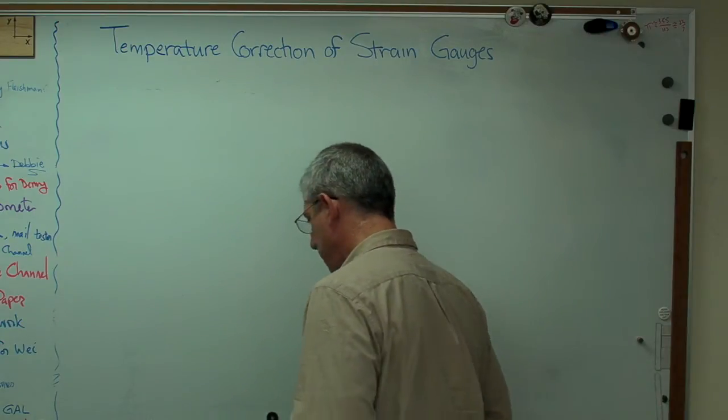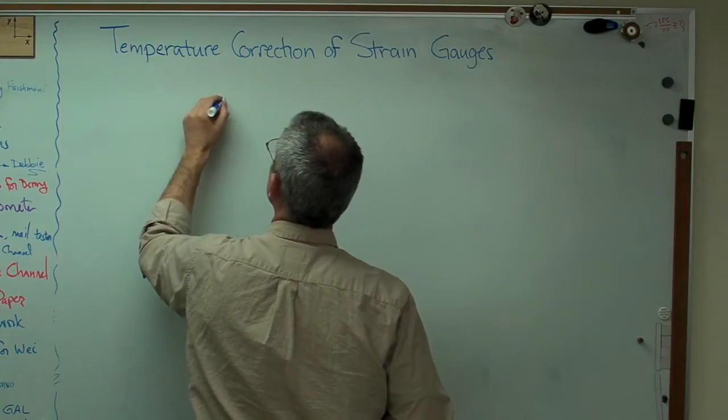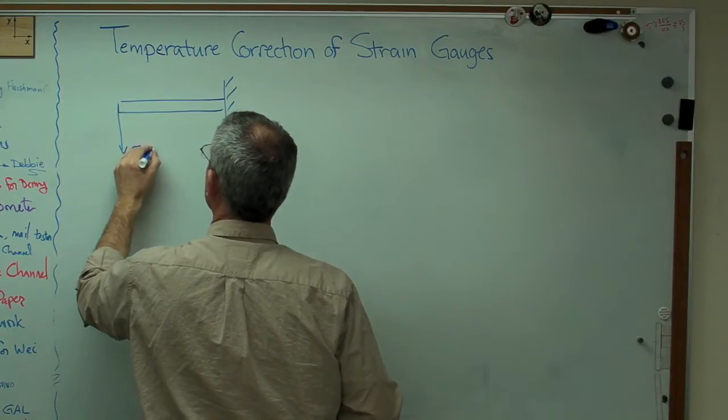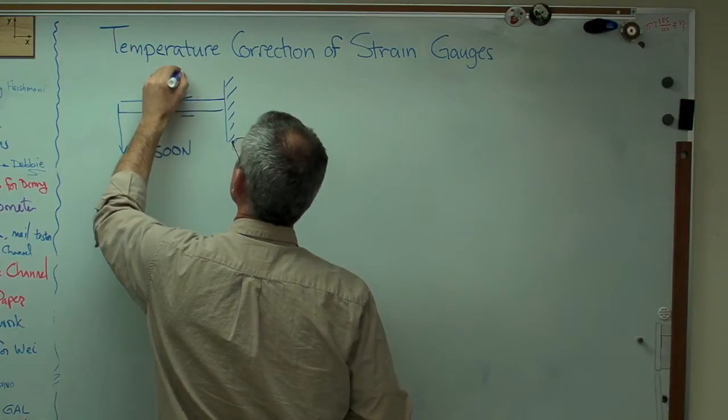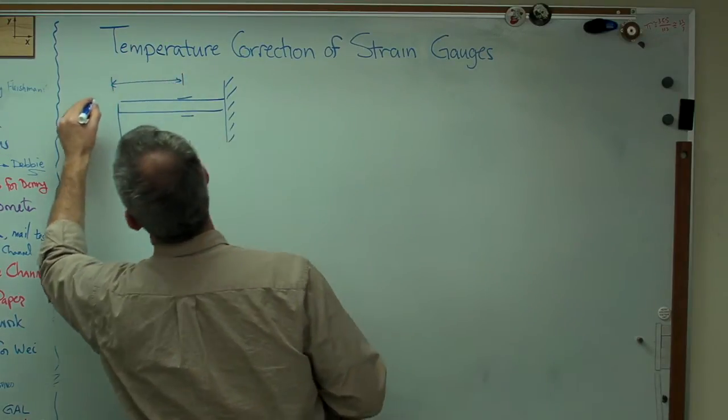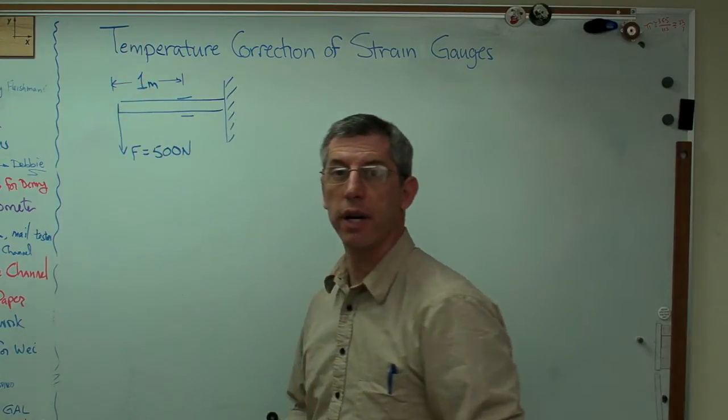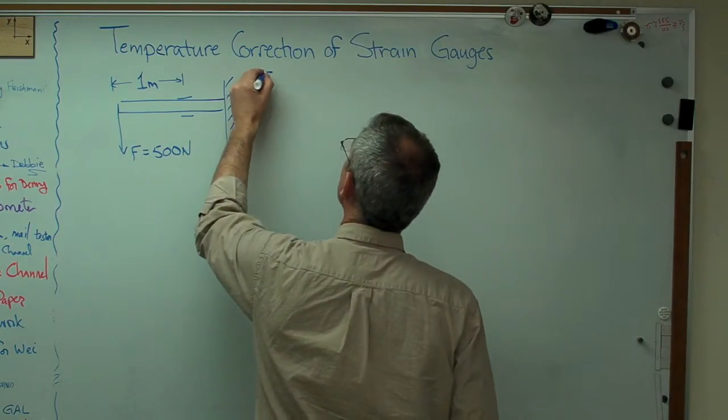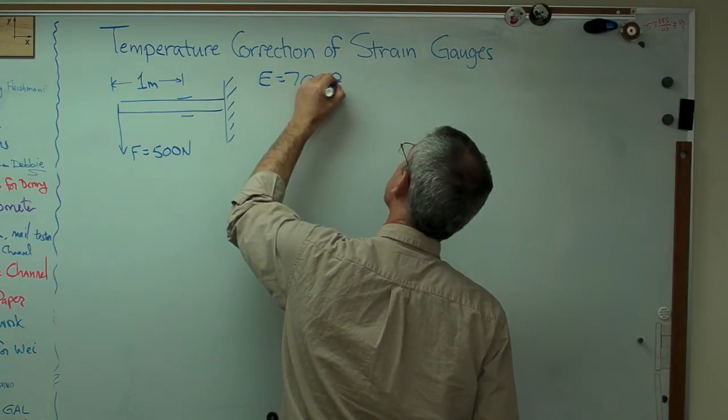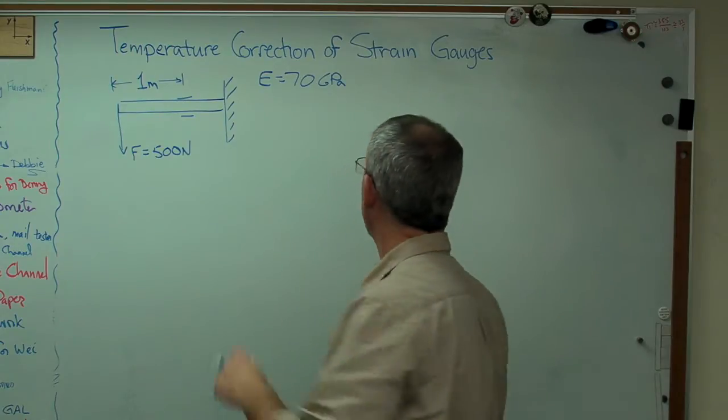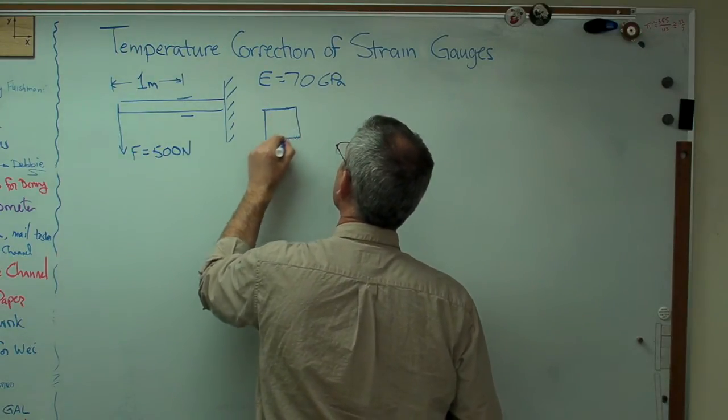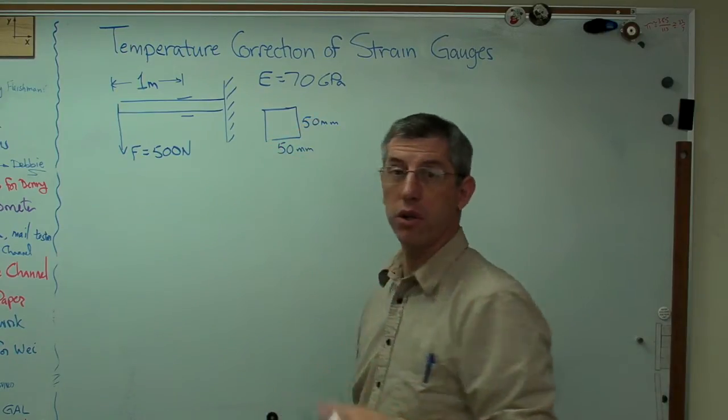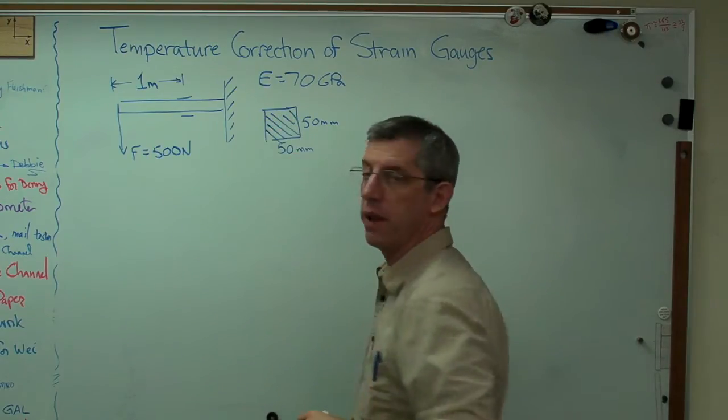Now we're going to need a sample case here. Let's imagine a simple beam cantilevered on the right side with a force of 500 newtons. We've got two strain gauges on here and the distance from the force to the end of the gauge is one meter. We'll assume this beam is made out of aluminum, so E is 70 gigapascals. The cross sectional shape is going to be 50 millimeters square, and we're going to assume it's solid aluminum, so there's no center hole or anything like that to worry about.